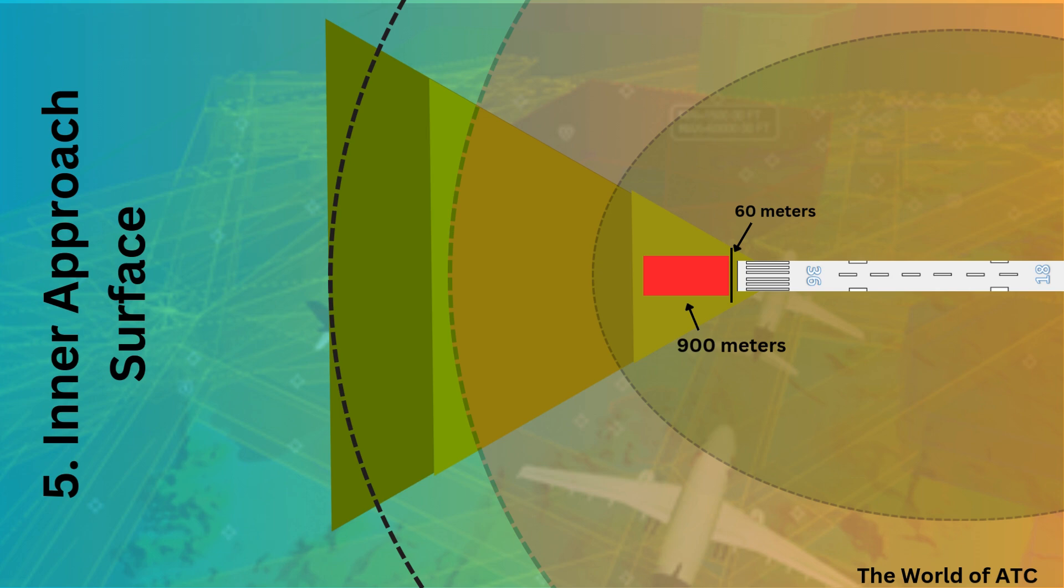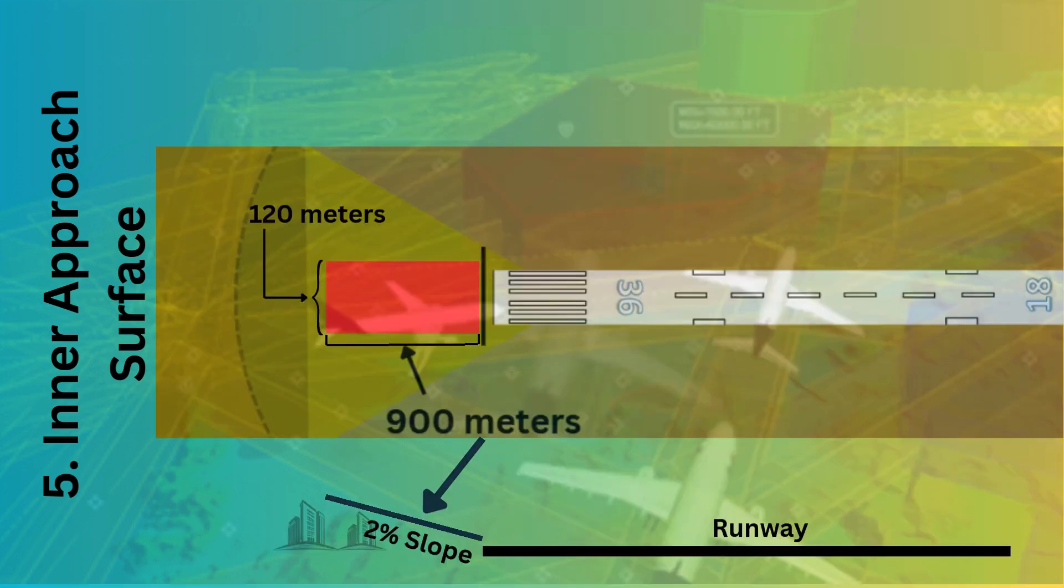Starting from the runway strip, that is 60 meters from runway threshold, extending for 900 meters, the red area marked is inner approach surface. It has a width of 120 meters and, just like approach surface, it has a slope of 2%.